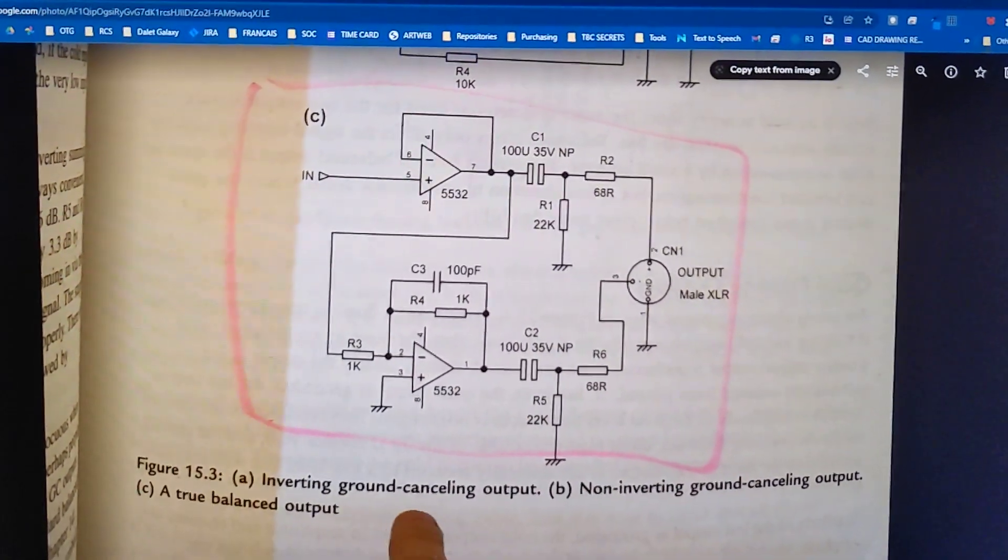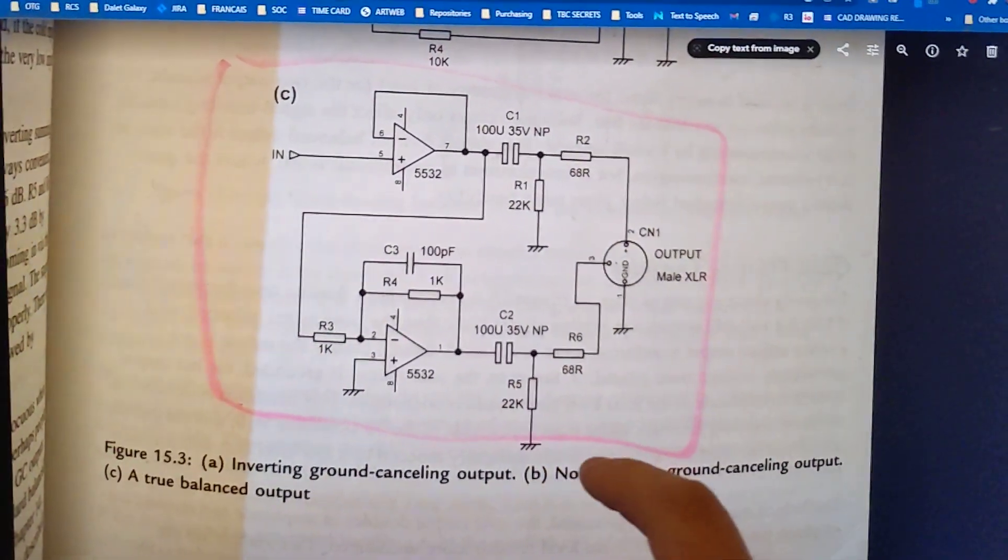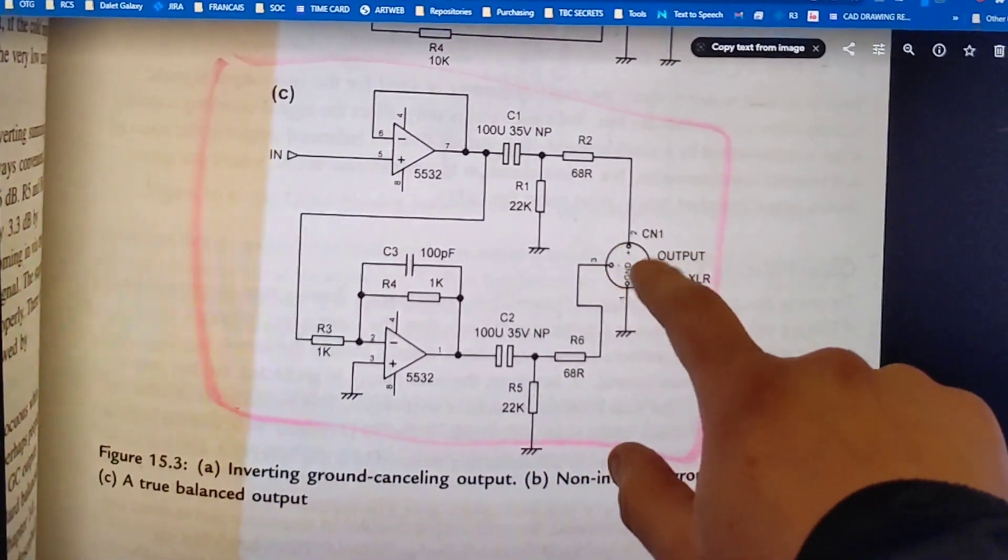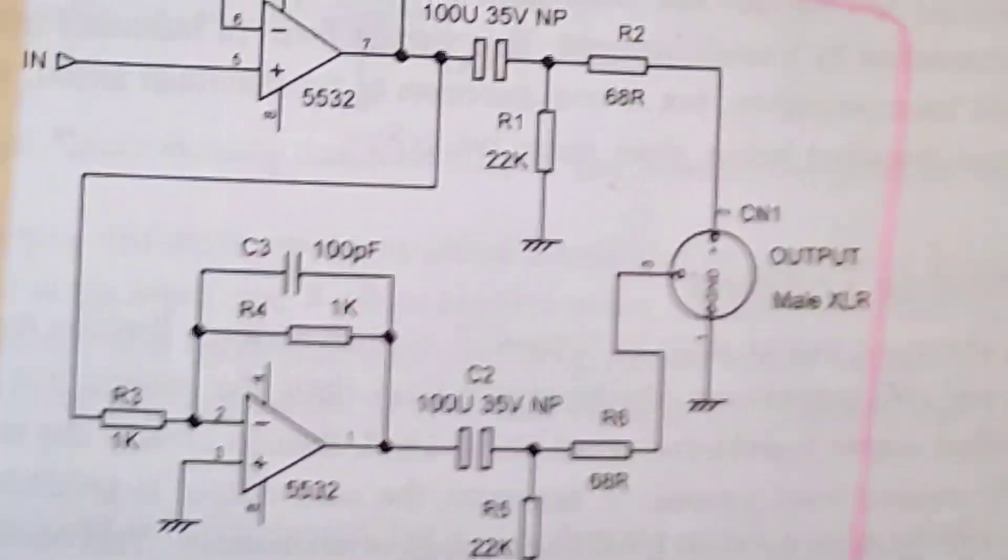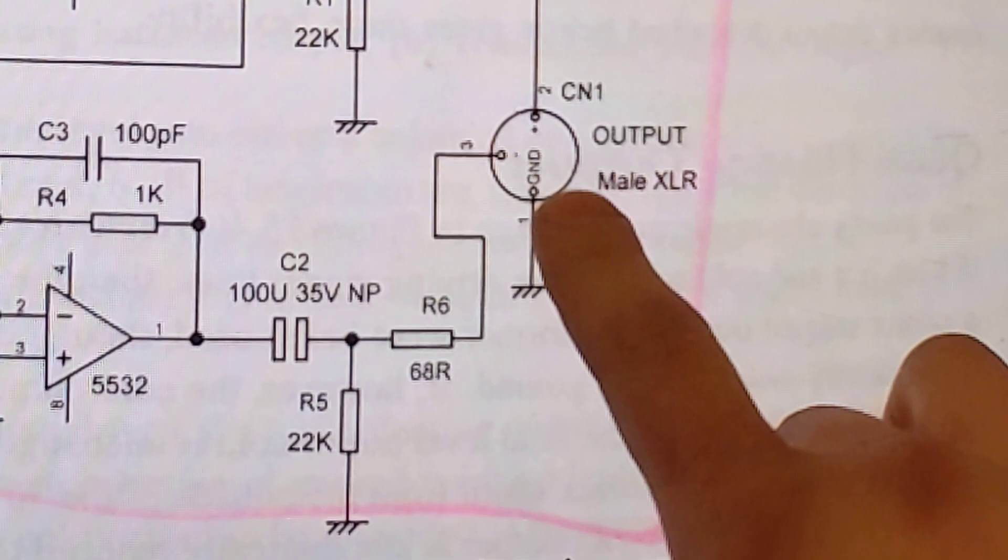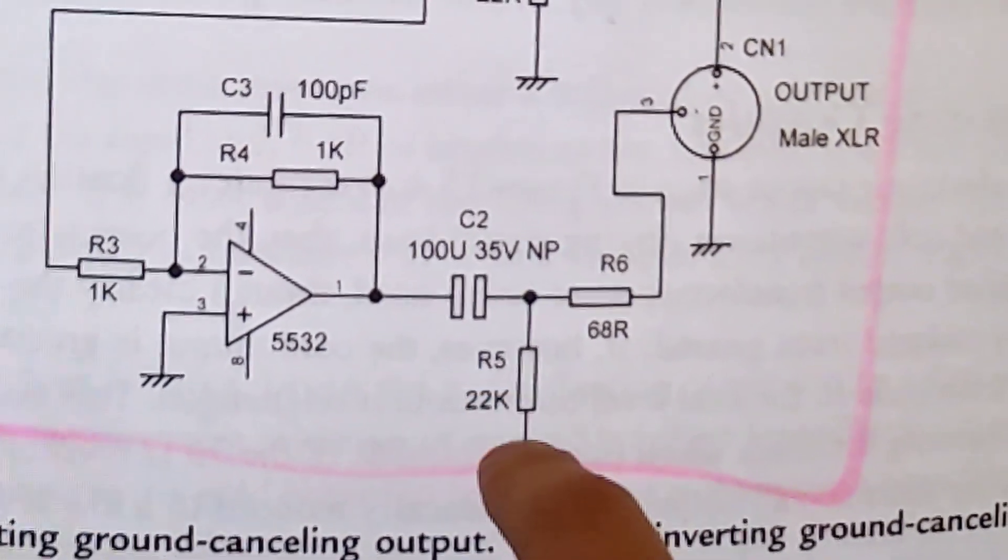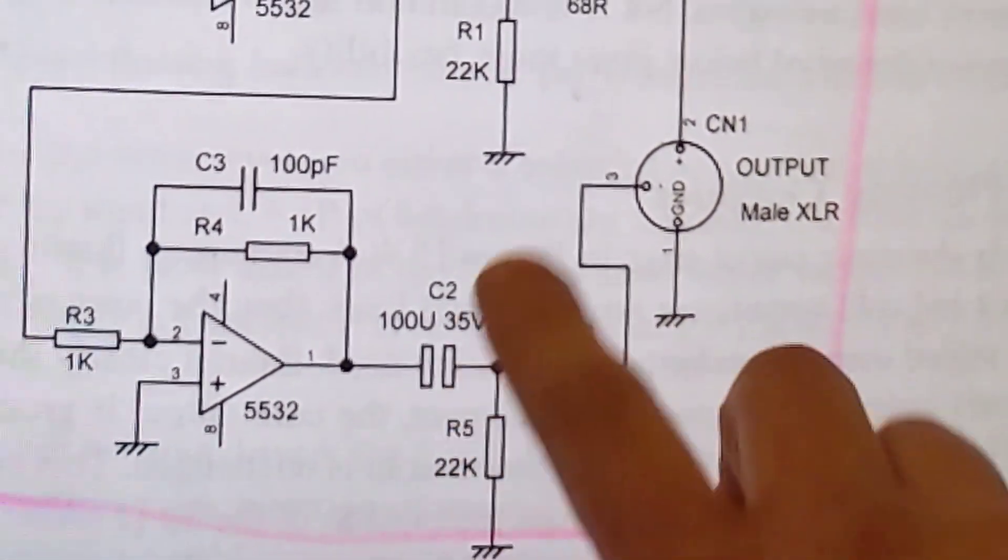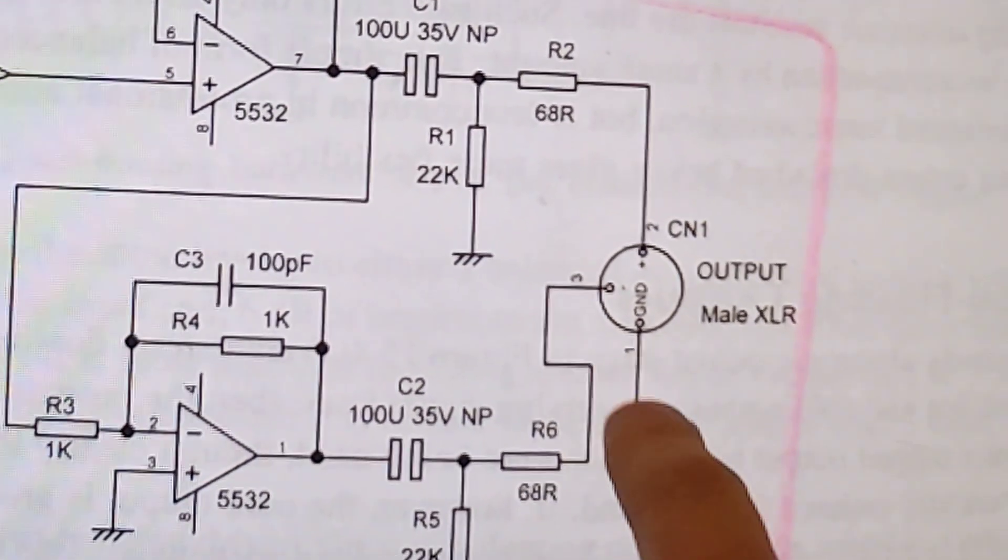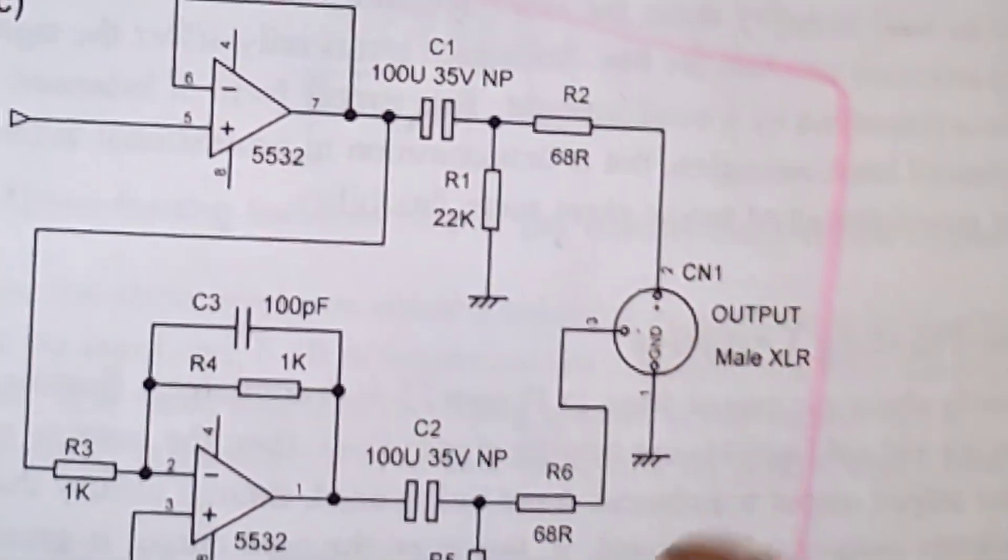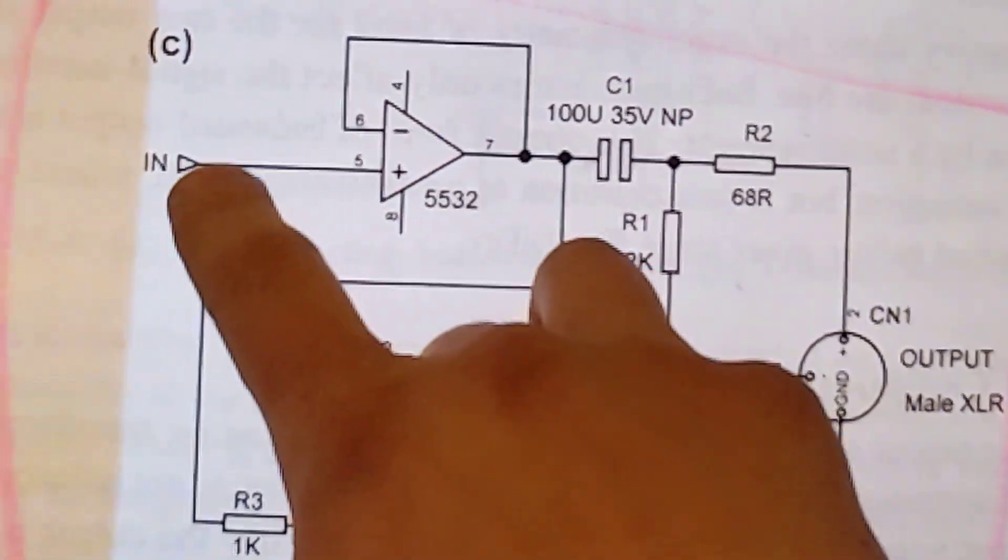But here this is called a true balanced output in this beautiful book called Small Signal Audio by Douglas Self. I'll try to put a link below. And it goes to a typical connector and I take issue with one thing here. So this is chassis connector, this is the pin one problem. And this should actually be signal audio ground. These shouldn't actually be the same, but you're trying to ground this to the chassis of this circuit as fast as possible. I digress.